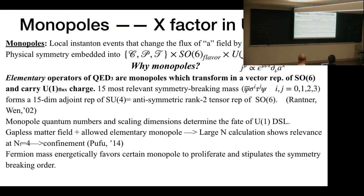Why do we consider monopoles? Monopoles are the most elementary operator in this QED3 because they transform in the vector representation of the SO(6), which is associated with the SO(4) flavor symmetry. Also, they carry this charge of the U(1) flux conservation. So if we don't add the monopole operator, the total flux of the small A-gauge field is actually conserved, which is why we have this U(1) flux conservation.